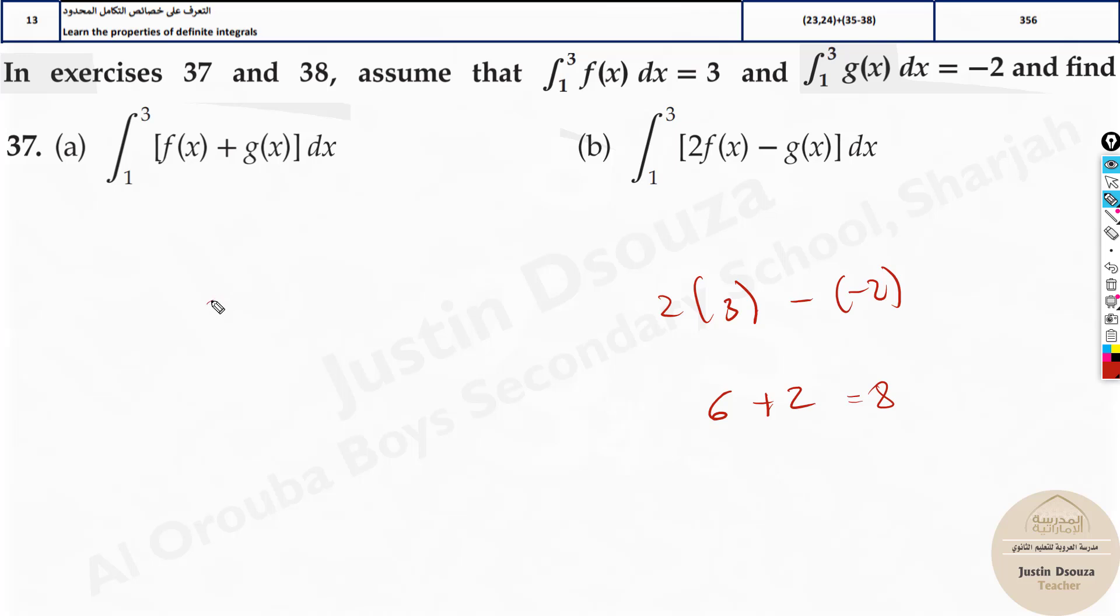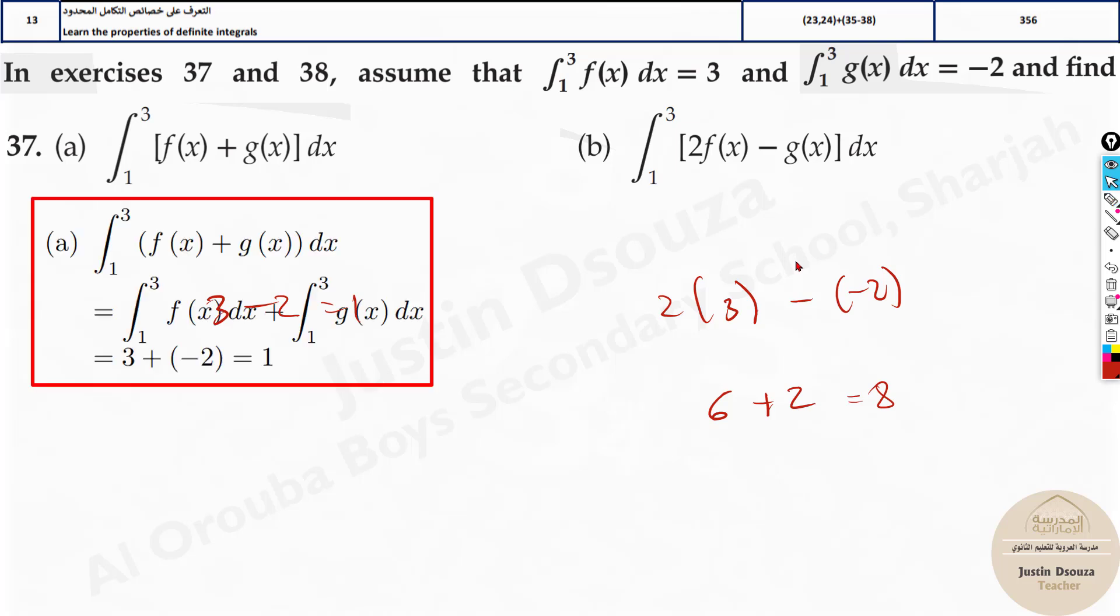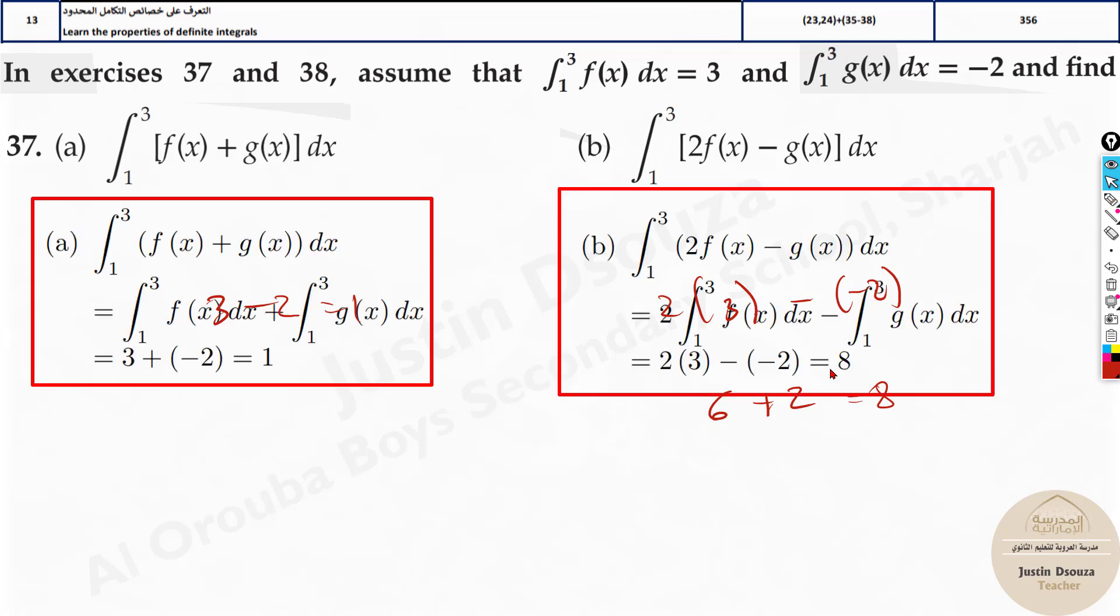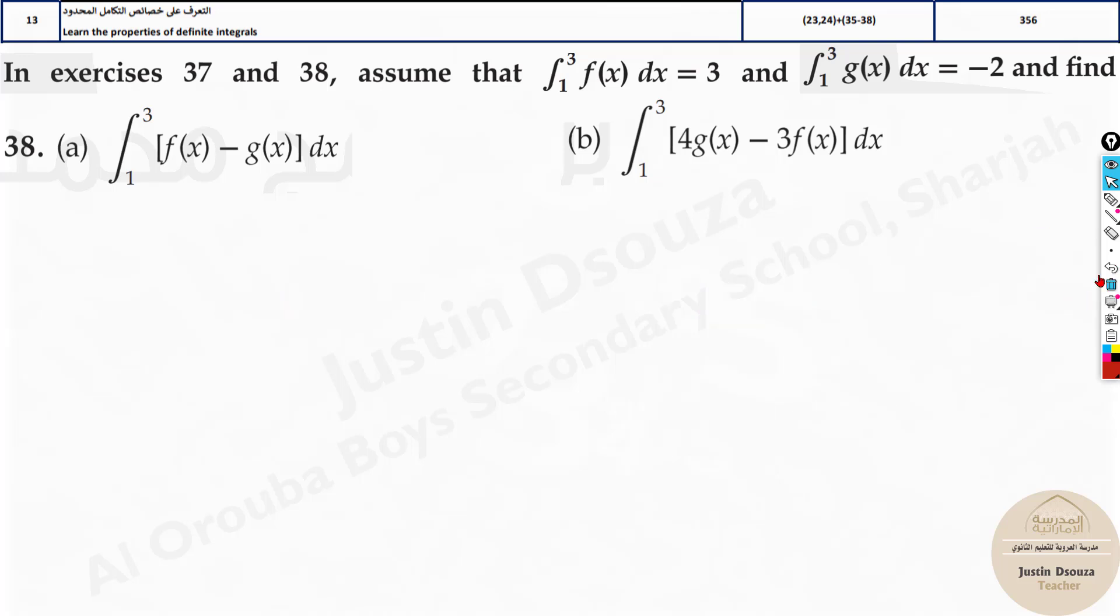Same thing over here, we have to just do 3 minus 2, the answer is 1. And it is as easy as it can get. This is 1, this is 8. Similarly please do try these by yourselves. Over here we have 4 times g of x is minus 2 minus 3 times f of x is 3. You can put in the calculator and solve. Over here we have f of x minus of minus 2, it will be plus, so it will be 5. Minus 8 minus 9, it will be 17 minus 17. These are the answers.